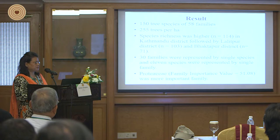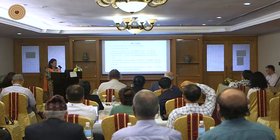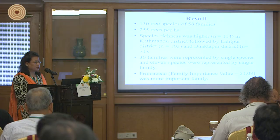The results showed that 150 tree species belonging to 58 families were recorded. Tree density was 255 trees per hectare. Species richness was highest in Kathmandu district with 114, followed by Lalitpur with 103, and Bhaktapur with 71. Among families, 30 families were represented by a single species, 11 species were represented by a single family, and the Proteaceae family was recorded as the most important family with a family importance value of 51.08.